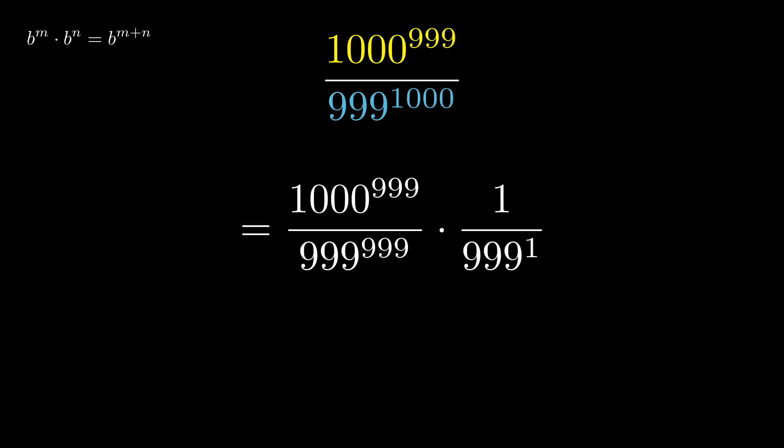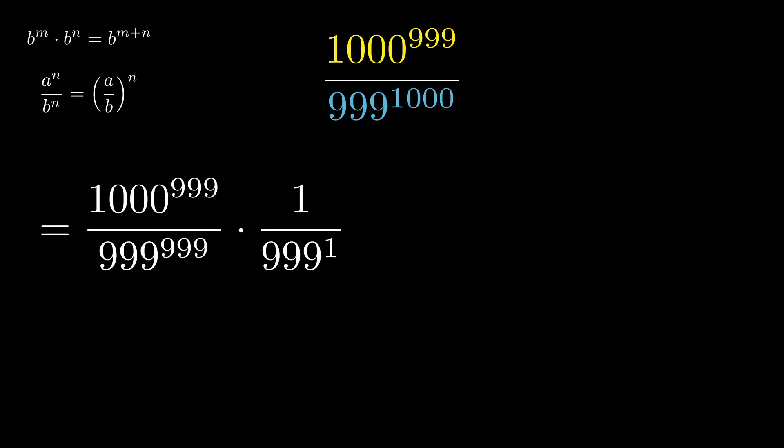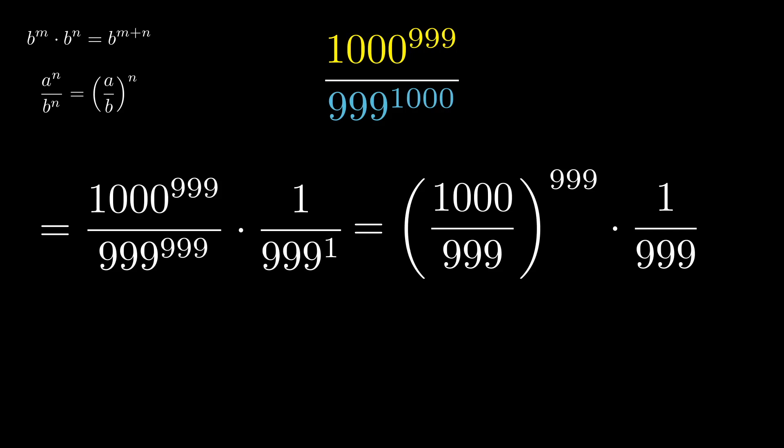So let's use a foundational property of exponents to peel off one of those 999s. That way, we have this ratio where the exponents are the same. We can use a further property of exponents to raise this ratio all to the 999. Now that we've dealt with putting the exponent in just one place, maybe we can simplify the inside of this a little bit.